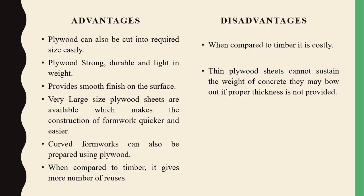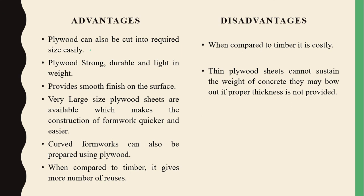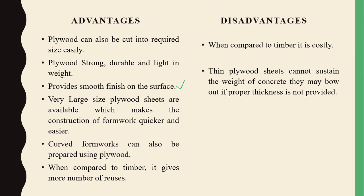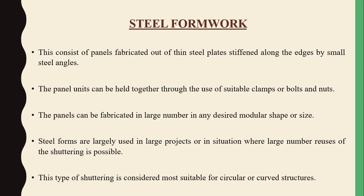You can see the timber frames with red-colored plywood sheets attached. Plywood can be cut into any shape, is strong and durable, and provides a very smooth finish to the concrete surface. Once concrete is poured, you get a smooth finishing; concreting is done easily, and you can even make curved formworks using plywood. Number of reuses is more. Disadvantages: slightly costlier than timber, and thin plywood sheets cannot sustain the weight of concrete for longer periods.